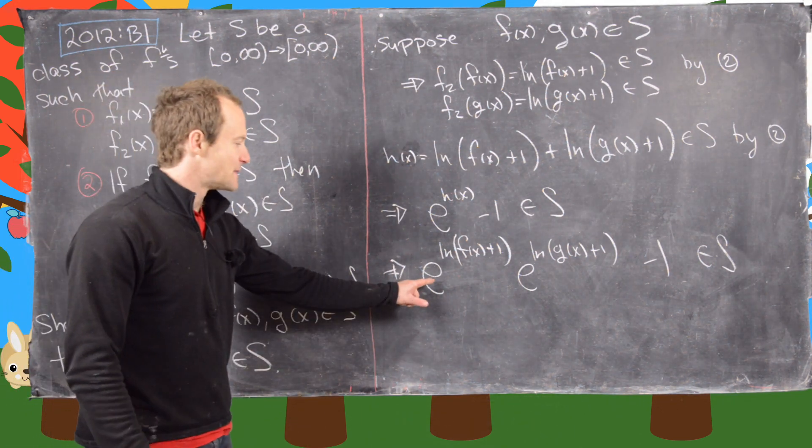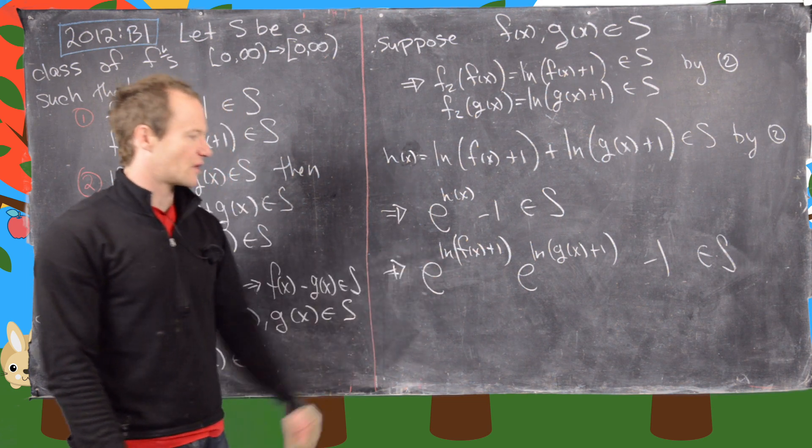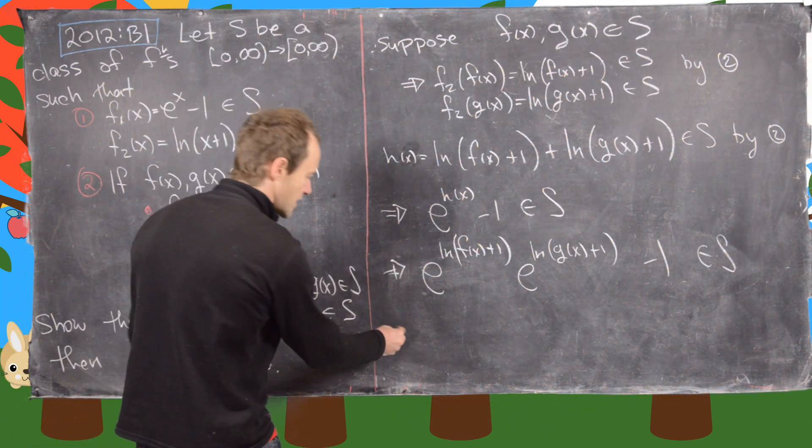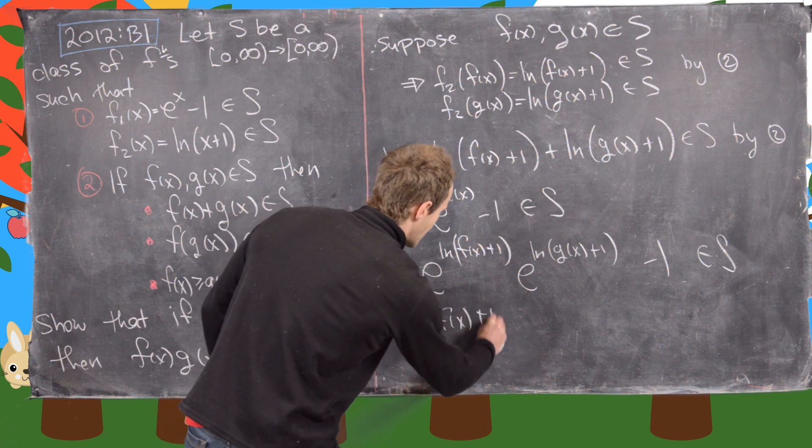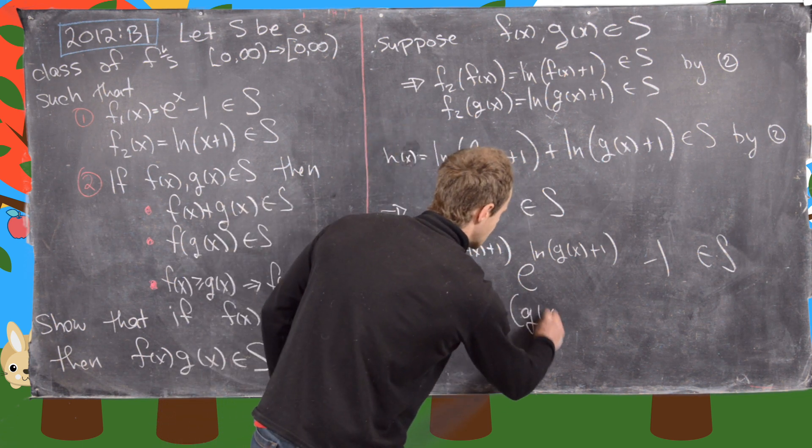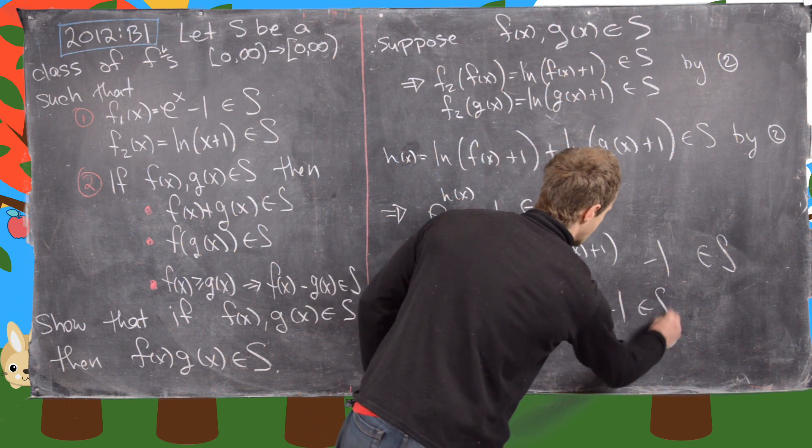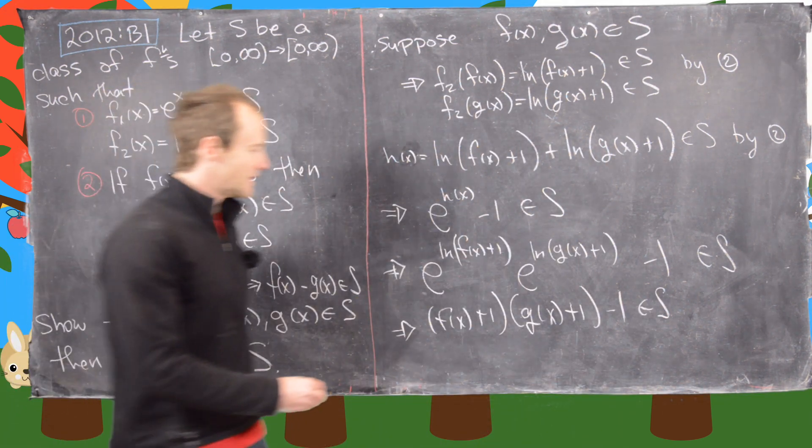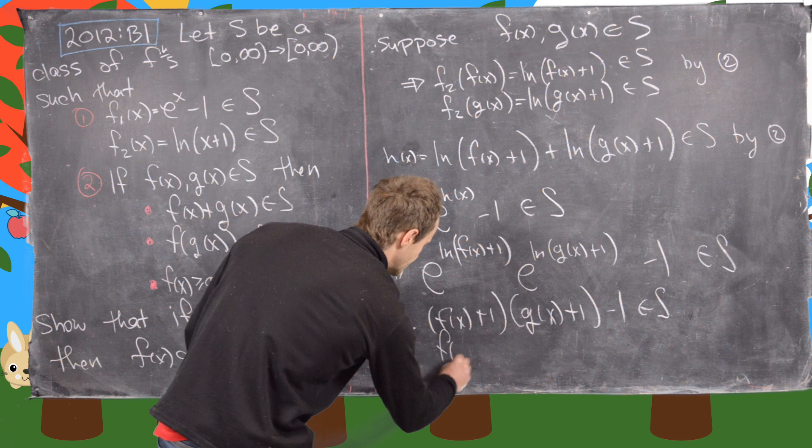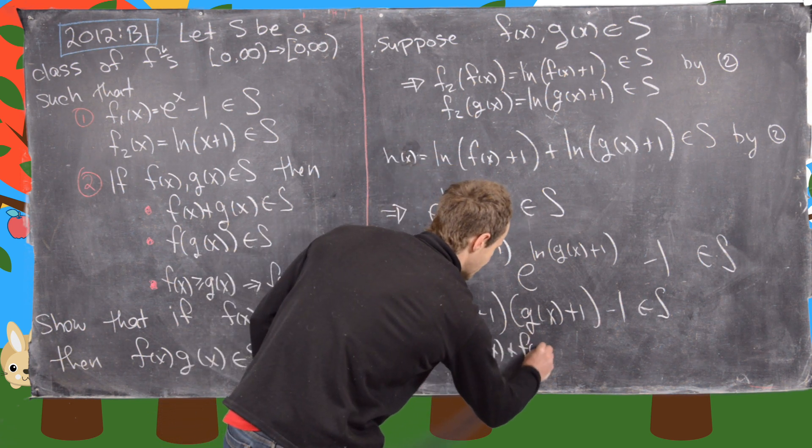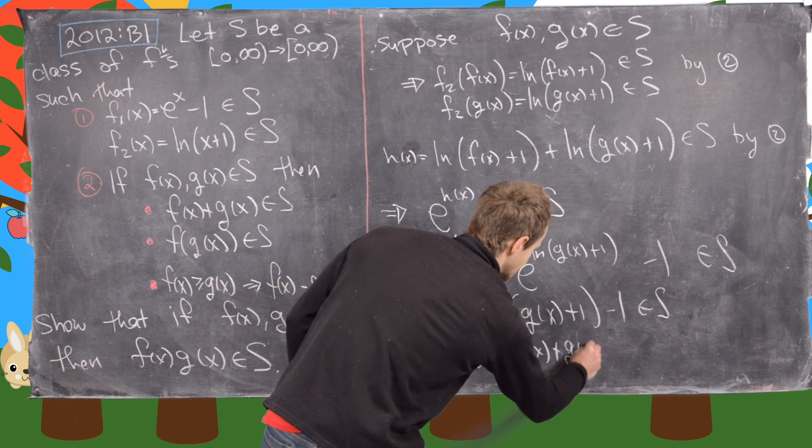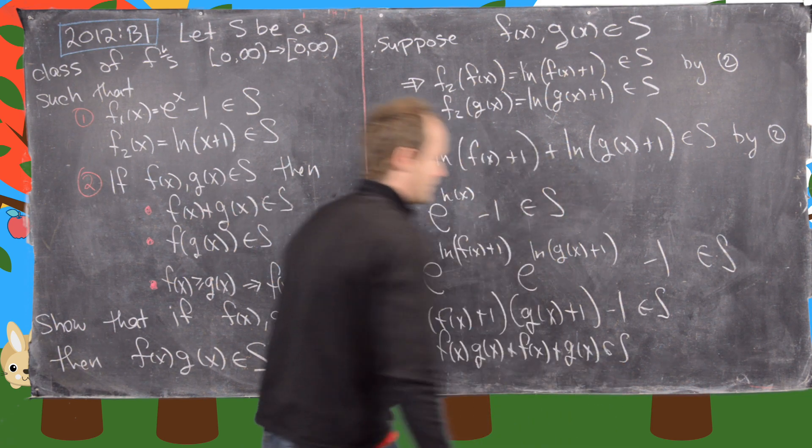Now we can let the exponential and the logarithmic function cancel each other. And that gives us f of x plus 1 times g of x plus 1 minus 1 is an element of S. But now that's exactly equal to f of x times g of x plus f of x plus g of x, which is an element of S.